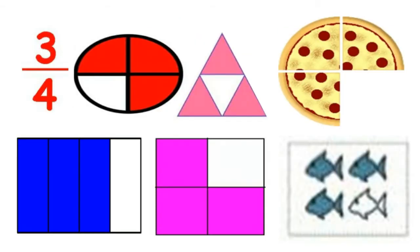One whole is divided into four equal parts and 3 parts are to be shaded — that is three fourths. Each picture is divided into 4 parts. In this, 3 parts are shaded. The shaded portion is called three fourths.